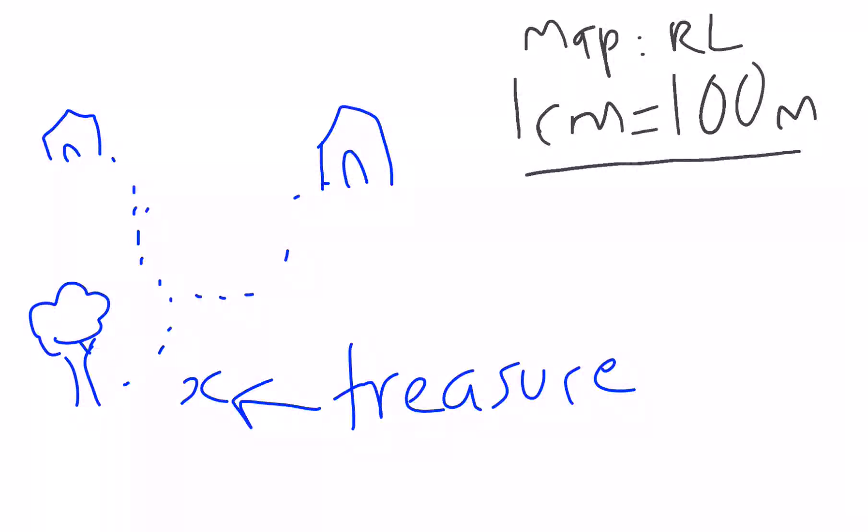This one here is just a simple conversion scale. If we measured the distance from the tree to the treasure on the map as two centimeters, we can see that one centimeter is a hundred meters, so obviously the distance in real life from the tree to the treasure is 200 meters.